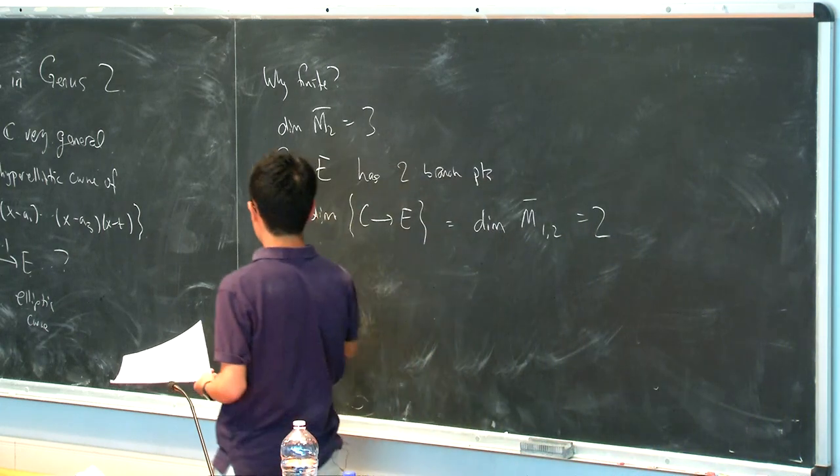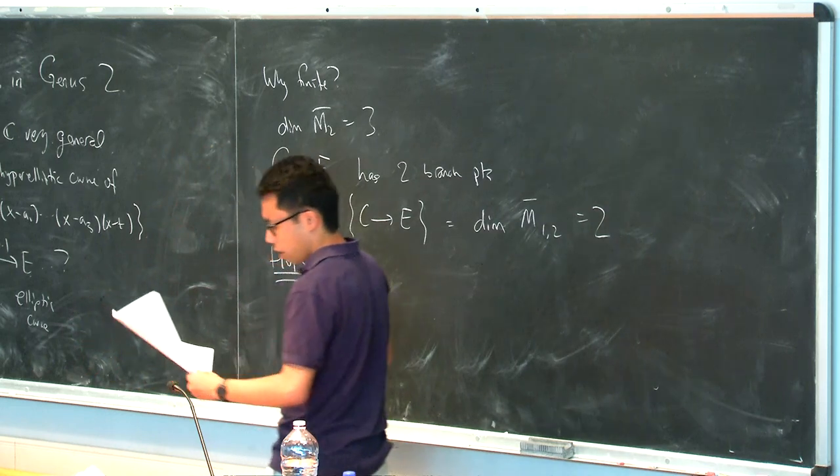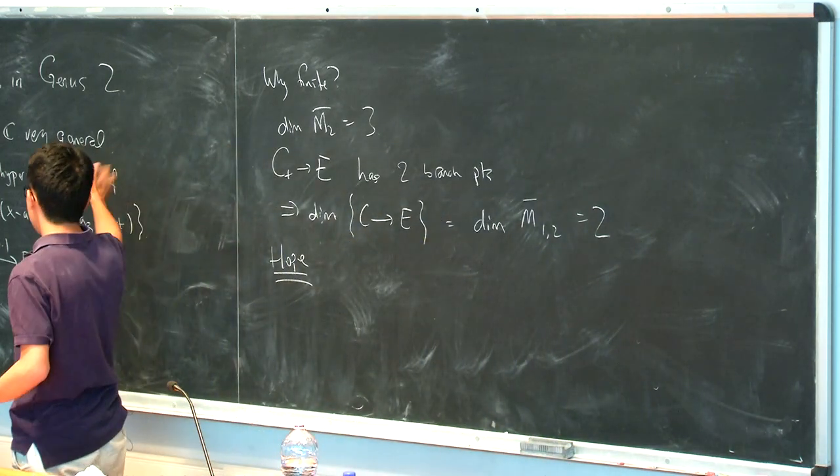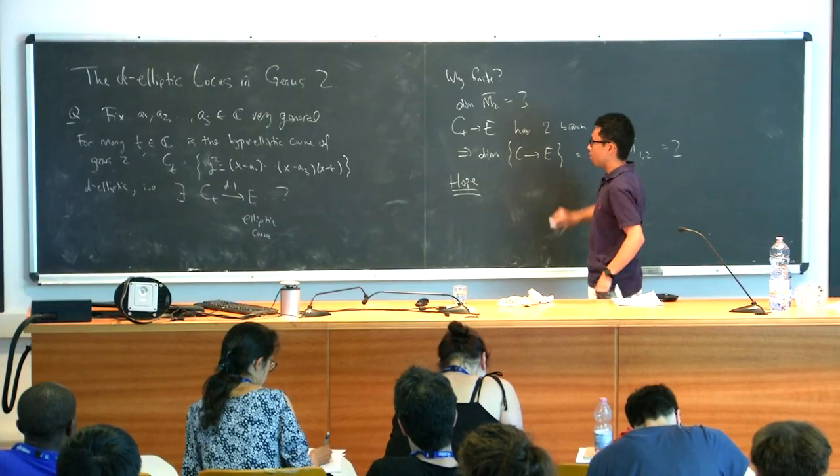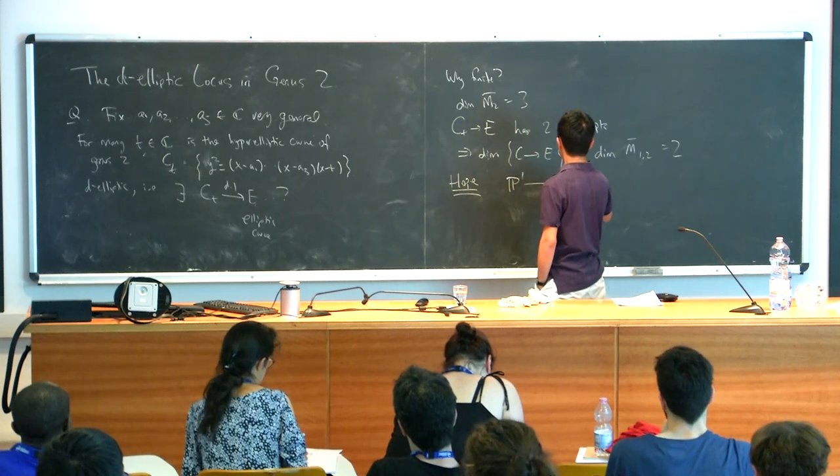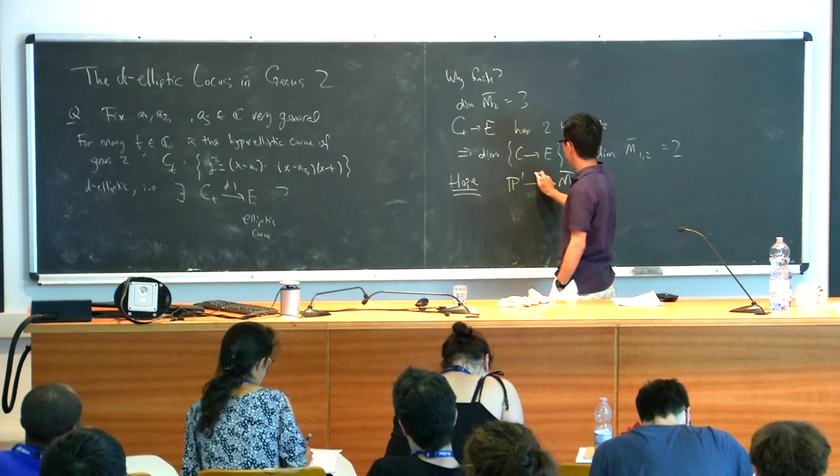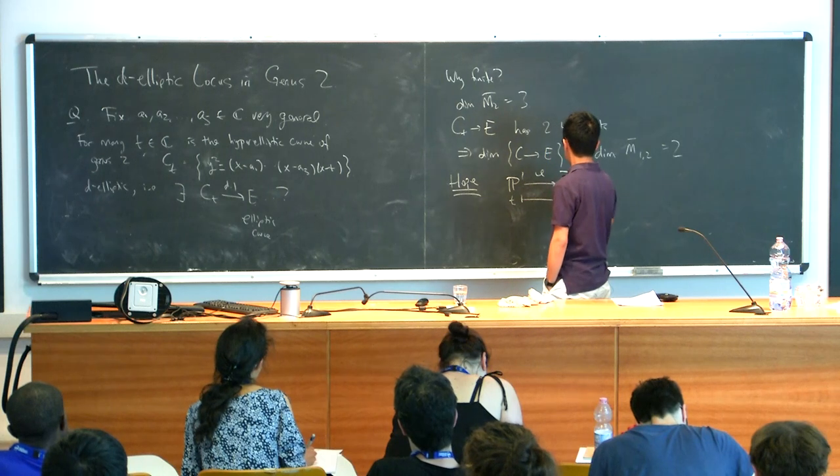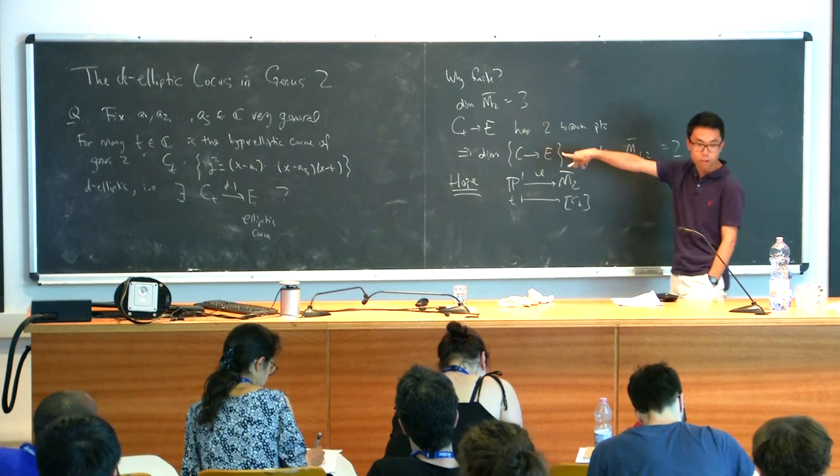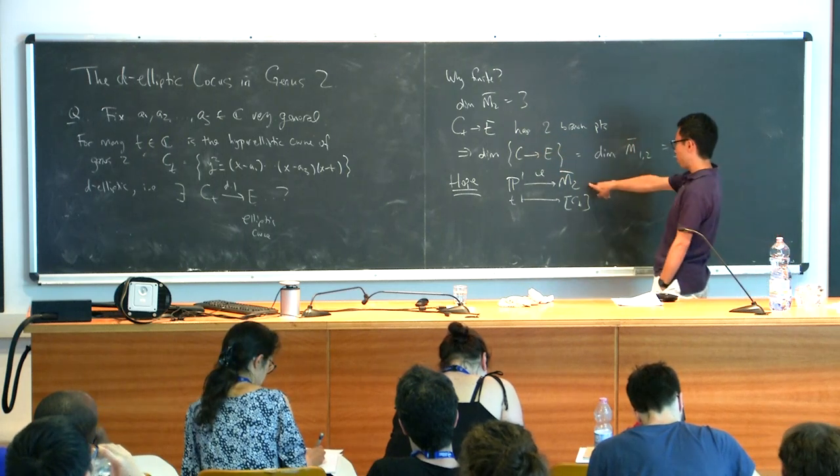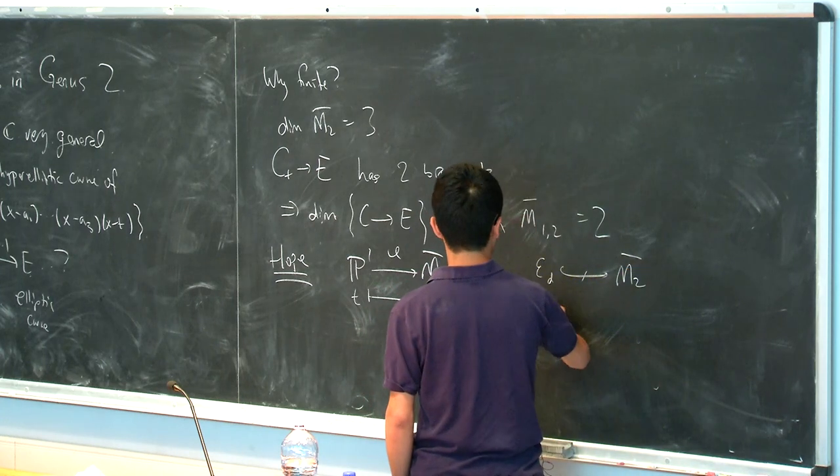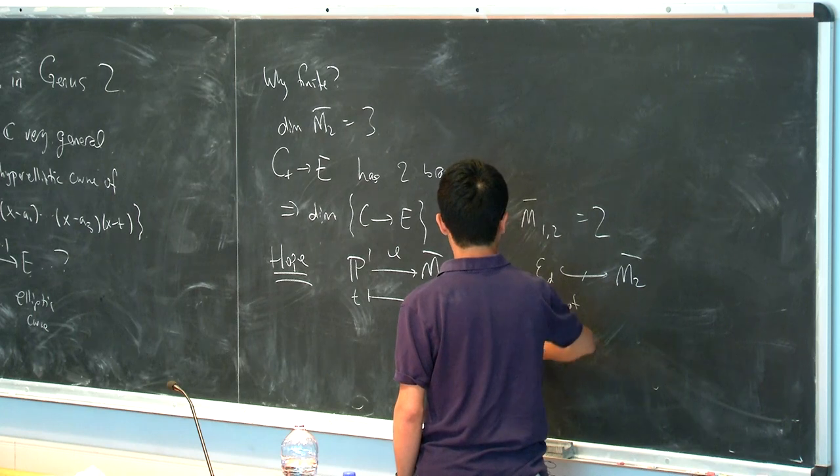So how might you hope to answer this question? Well, so I've defined for you a family over P1 inside M2 bar. So over here, I have a map like this, which I guess I would call phi, and it sends T to this curve C_T. And on the other hand, I have this locus of D-elliptic curves. But I'm working in M2 bar, so I need to take a closure. So this is a closure of the D-elliptic locus.